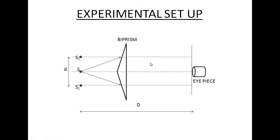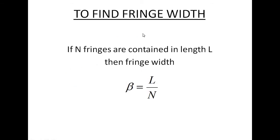The two beams of light coming out of the bi-prism appear to come from sources S1 and S2, which are nothing but virtual images of source S. So S1 and S2 act as coherent sources of monochromatic light. The distance between these two sources of light is assumed to be equal to small d, and the distance of the sources from the screen where the interference pattern is viewed is represented by capital D.